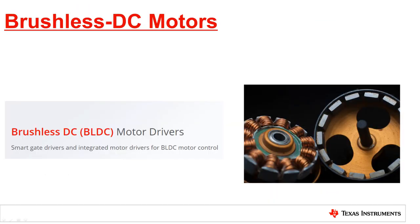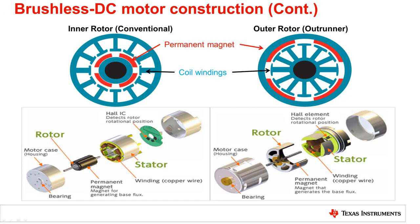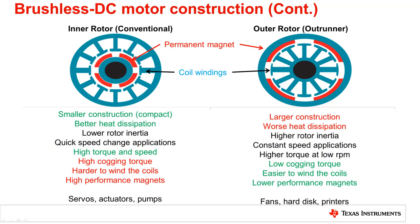Now let's look at the Brushless DC motor, or BLDC motor. Typically there are two types of Brushless DC motors. As the name indicates, inner rotor BLDC motors have the rotor inside the stator — this is a more conventional BLDC type used by many motor manufacturers. For outer rotor BLDC motors, the rotor is on the outside of the stator, which is also called the outrunner design. The inner rotor design typically benefits from smaller construction, better heat dissipation, and higher torque and speed. The outer rotor design typically benefits from low cogging torque, it being easier to wind the electromagnetic coils on the stator, and not needing high performance magnets.